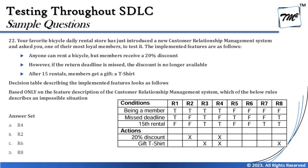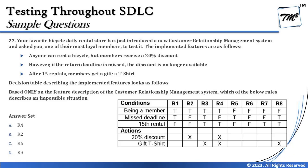The decision table describing the implemented features is shown on the right-hand side. We have eight test cases based on three conditions — two raised to the power three equals eight, giving eight combinations. The question asks: based only on the feature descriptions of the CRM system, which of the following rules describes an impossible situation?